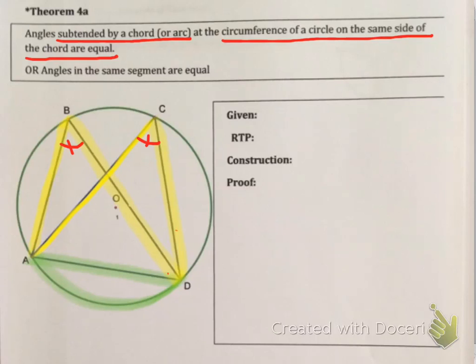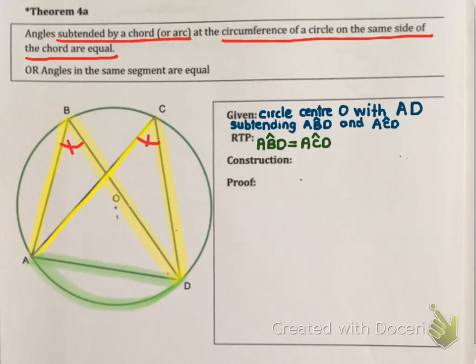Let's have a look at the proof. First of all, you are given a circle with centre O, and chord AD subtends ABD and ACD. We are trying to prove that ABD and ACD at the circumference are equal. Our construction is going to be radii OA and OD. This picture should remind you of Theorem 2.